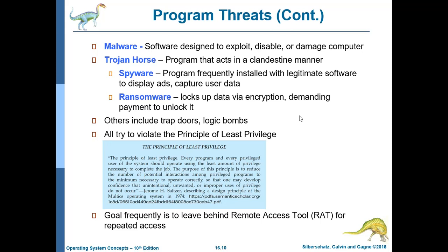A Trojan horse is a program that acts in a clandestine, secretive manner — it looks like a legitimate program but is not. Spyware is frequently installed alongside legitimate software to display ads and capture user data. Ransomware locks up data via encryption and demands payment to unlock it.